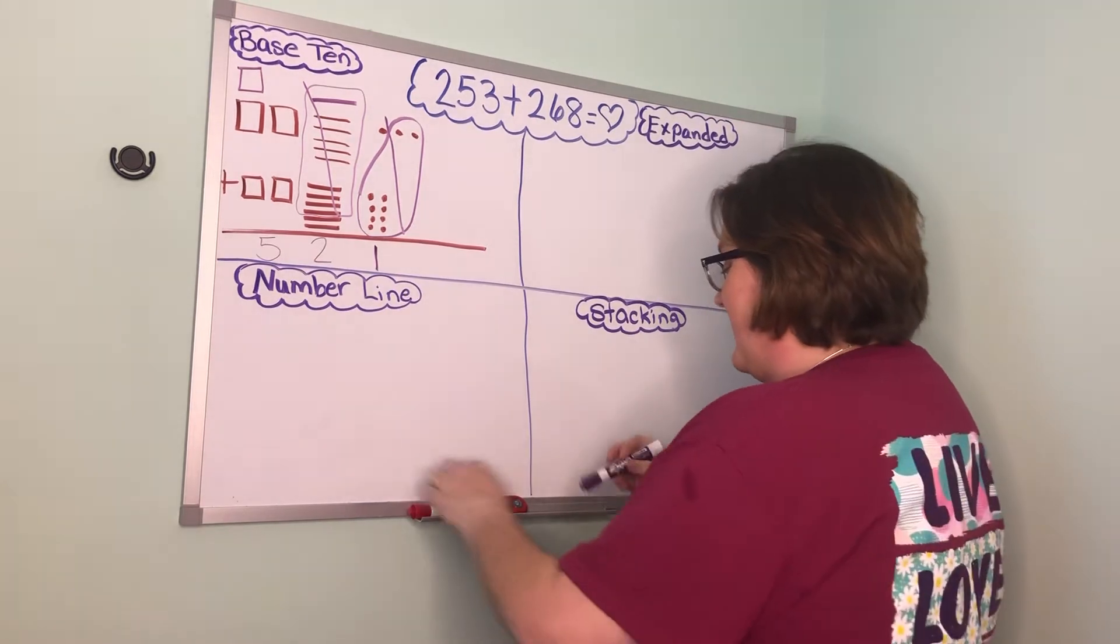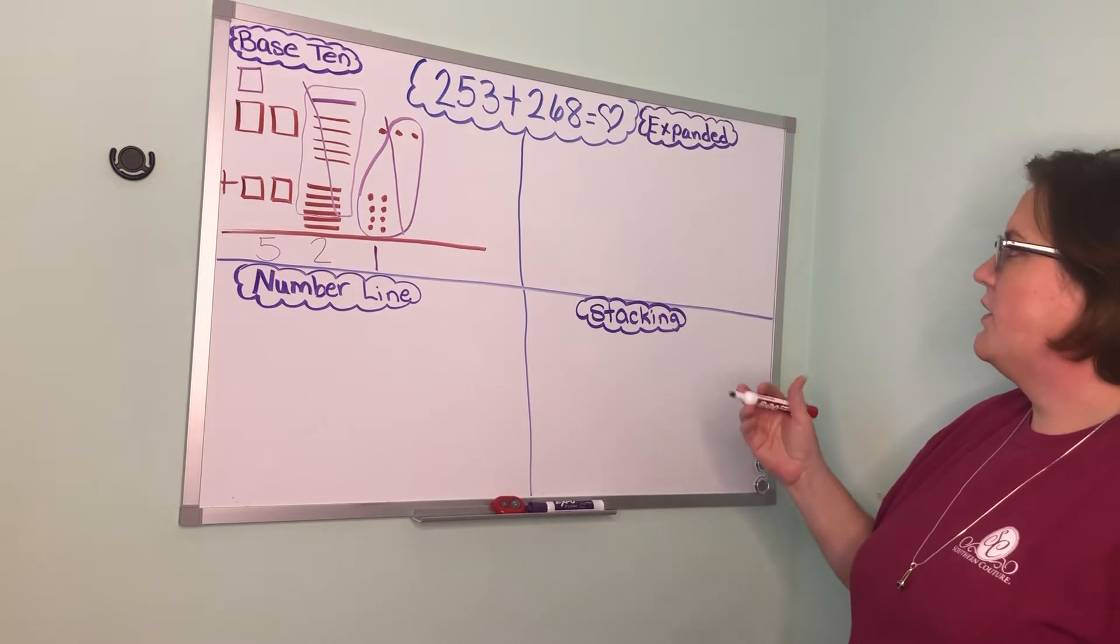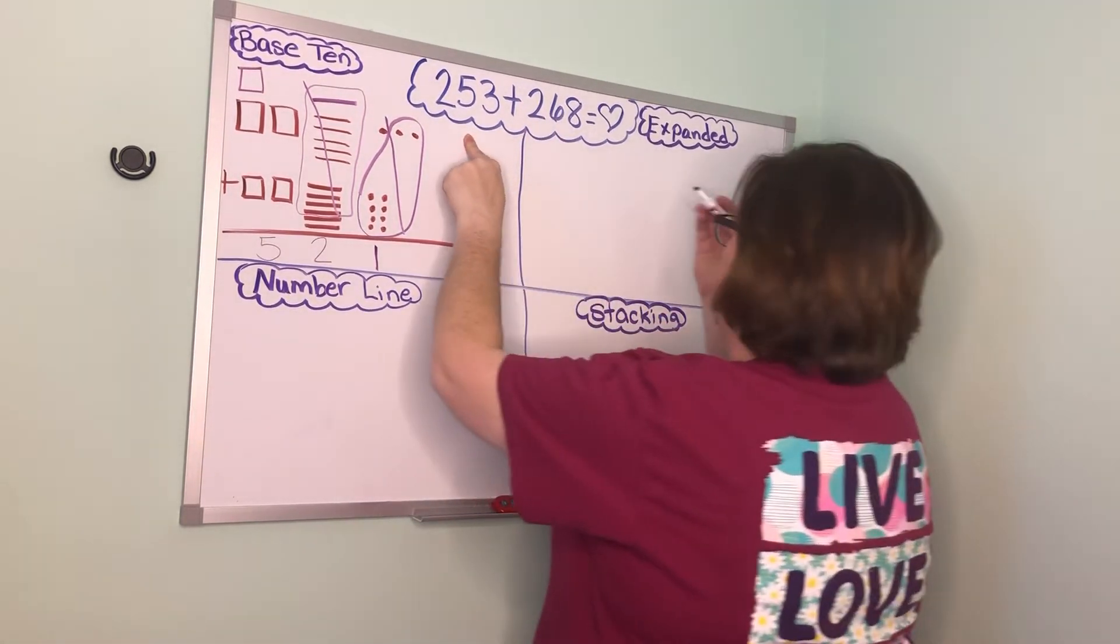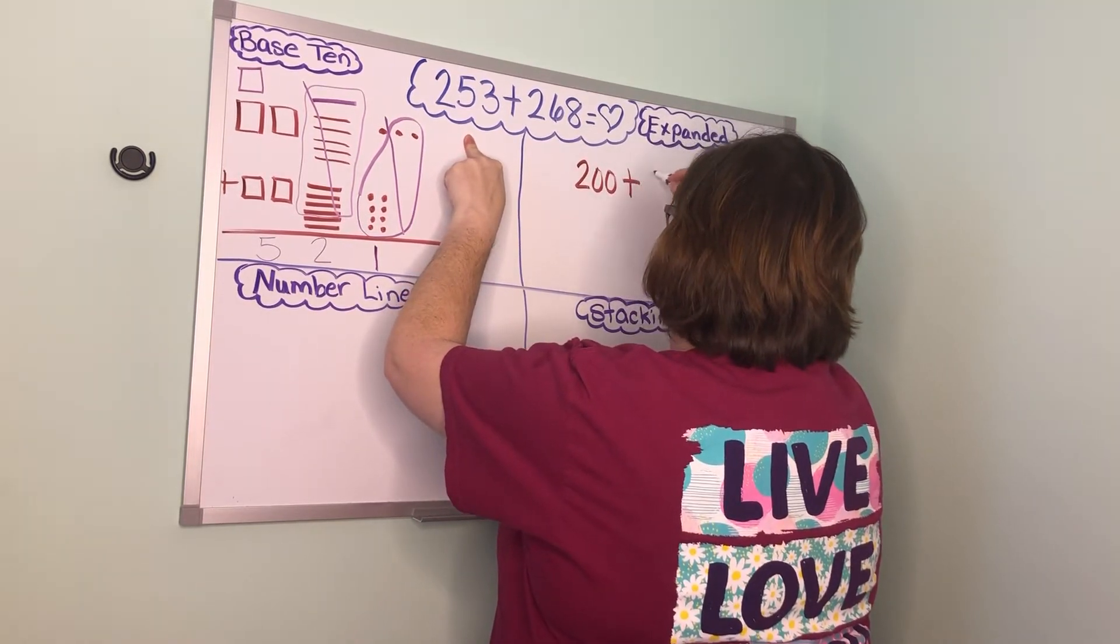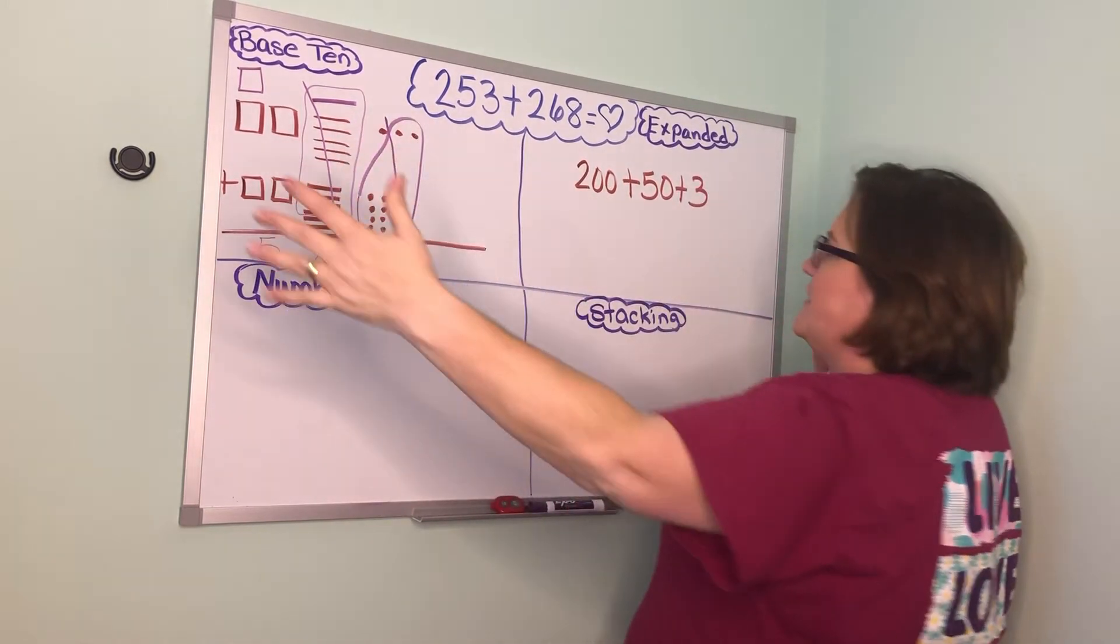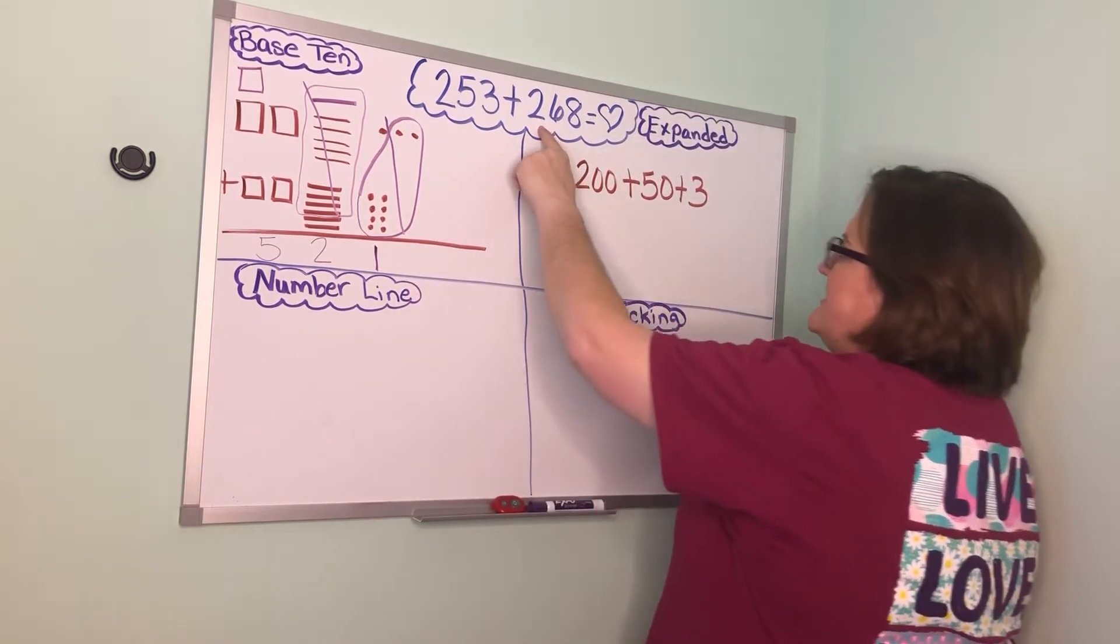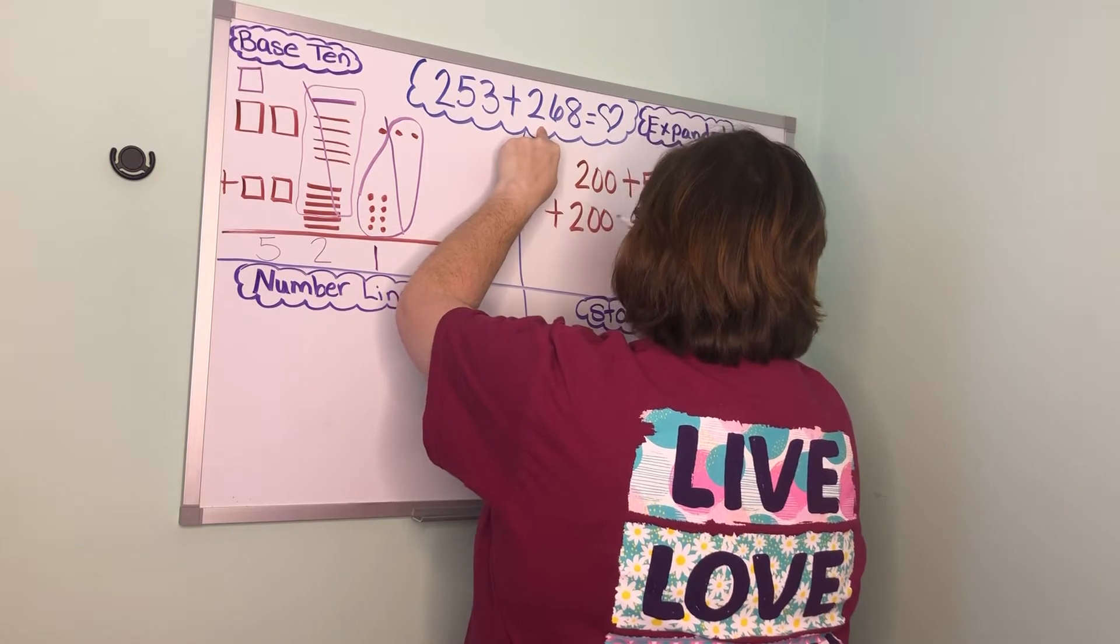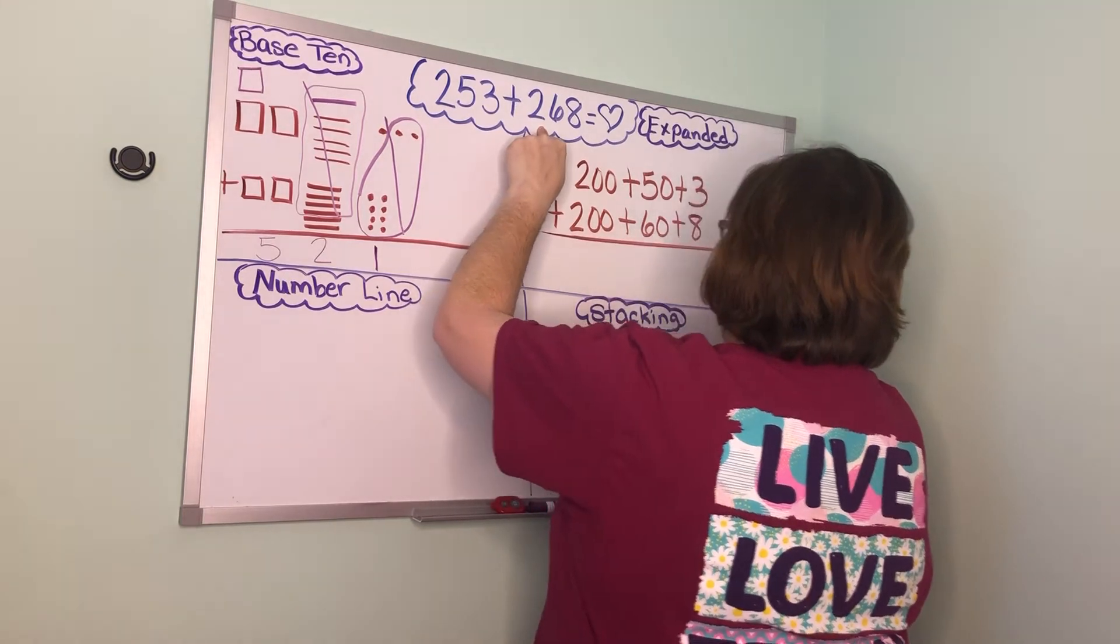All right now we're going to jump over to the expanded strategy, expanded form. So I would take my first number 253 and I would break that up into 200 plus 50 plus 3. So you just decompose it down and then I'm going to put a plus sign and then I have 268 which decomposes to 200 plus 60 plus 8. So we've broken it up.